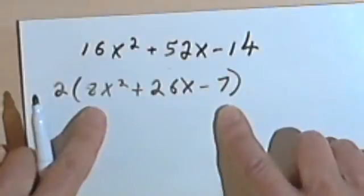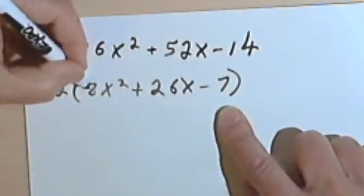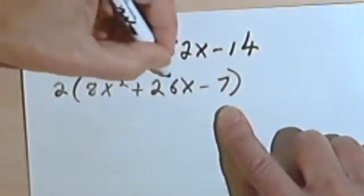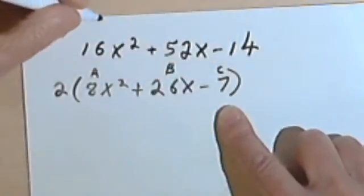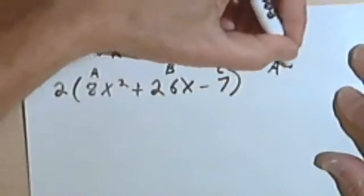So this is a bit easier. The 8 is going to be my A, 26 is going to be my B, and negative 7 is going to be my C. So let's see what AC is.